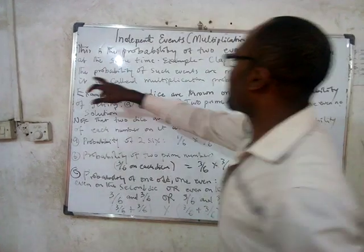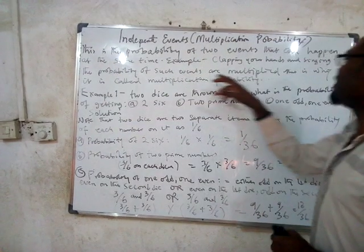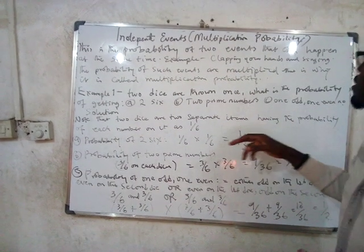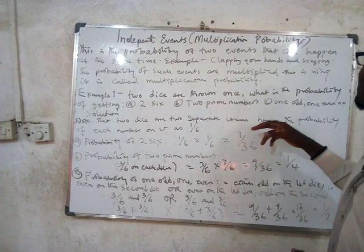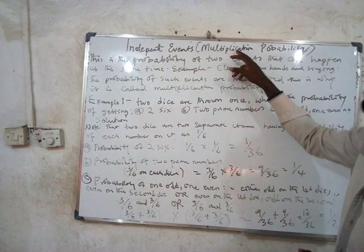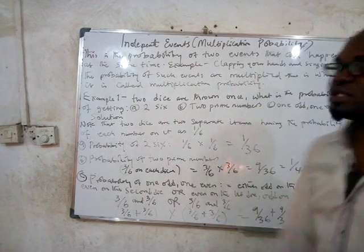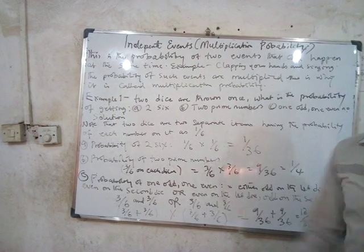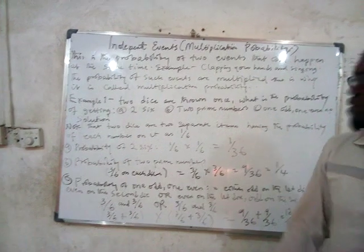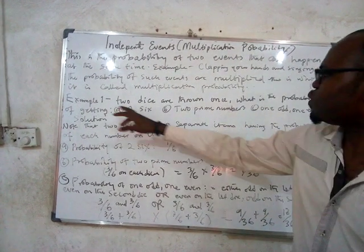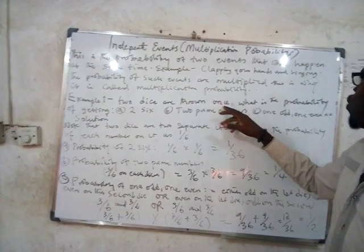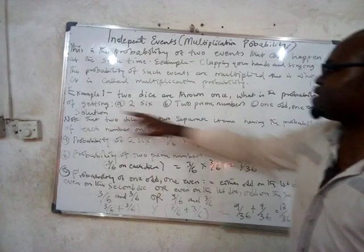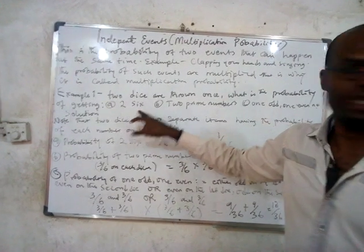The probability of such events are multiplied. That is why this is called the multiplication rule of probability. Let's take an example of two things that can happen together: two dice are thrown once. What is the probability of getting two sixes?